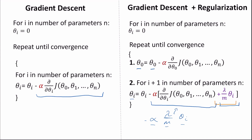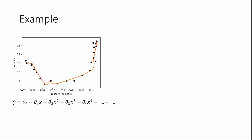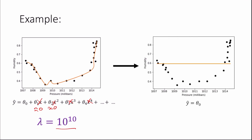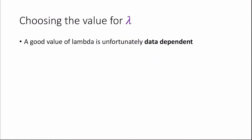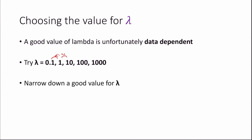Applying regularization with a very high lambda — say 10 to the power of 10 — reduces theta 1 through theta n very close to 0, making all features redundant and resulting in a very low variance model of y-hat equals theta 0. To choose a good value for lambda, since it is data dependent we must experiment. A good method is to try lambda = 0.1, then scale up by factors of 10: 0.1, 1, 10, 100, 1000. If we find the range between 1 and 10 gives good performance, we can then try lambda = 5 and narrow down further.